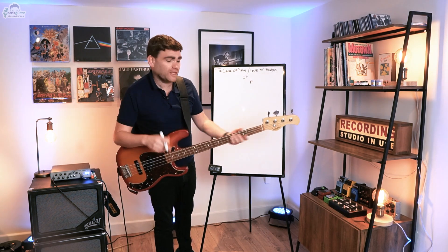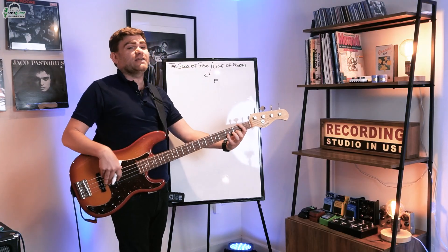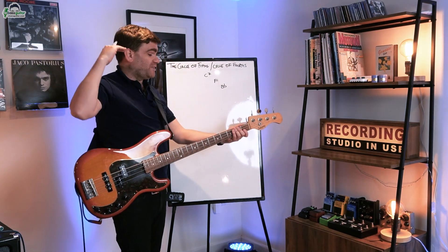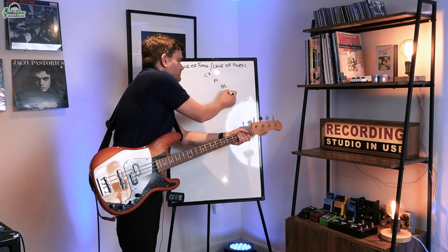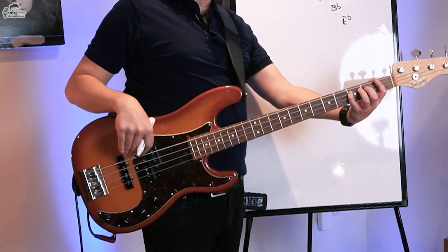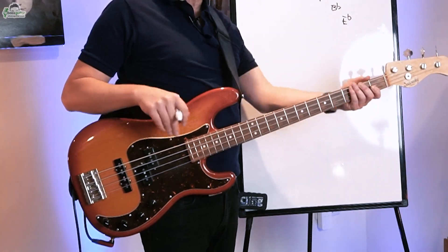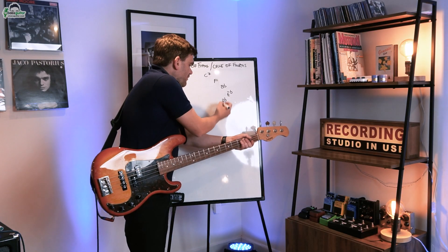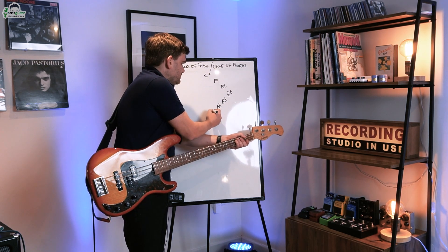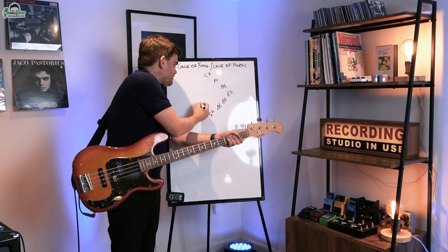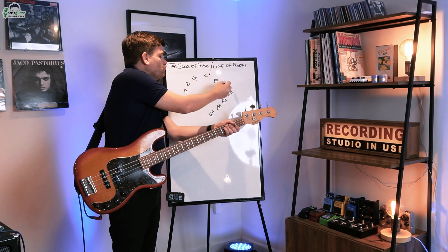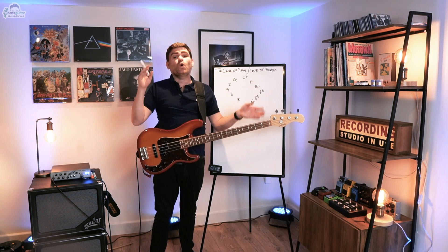Let's write out the rest of the circle of fifths — or the cycle of fourths, depending how you look at it — using this new lens. We've got C to F, then going down a fifth or up a fourth from F we get B flat, then from B flat we get E flat, then A flat, then D flat, then G flat. This is all written out in the PDF that comes with the lesson. Then we go to B, E, A, D, G, and we're back around the top — giving us our full cycle or circle of 12 notes.